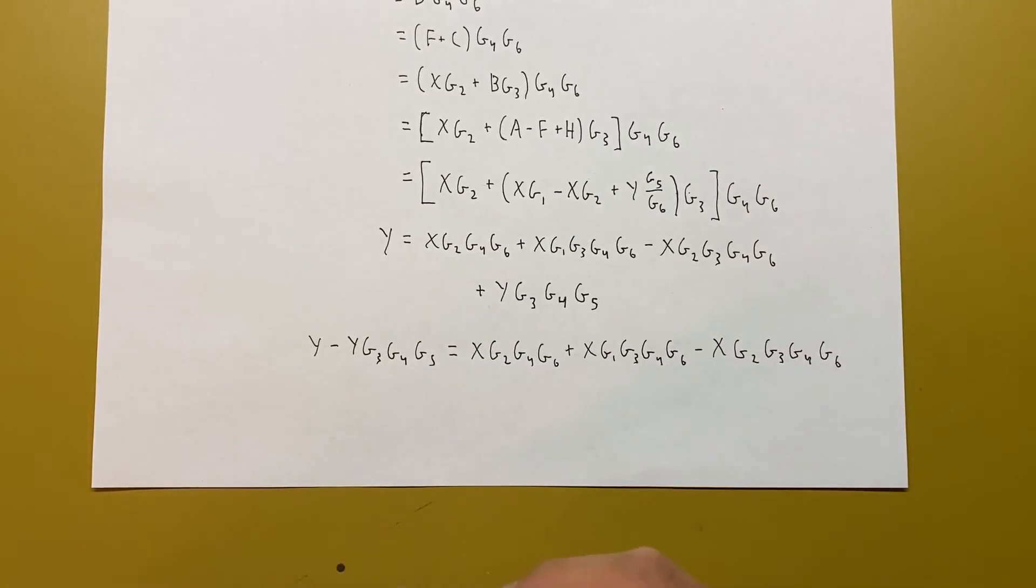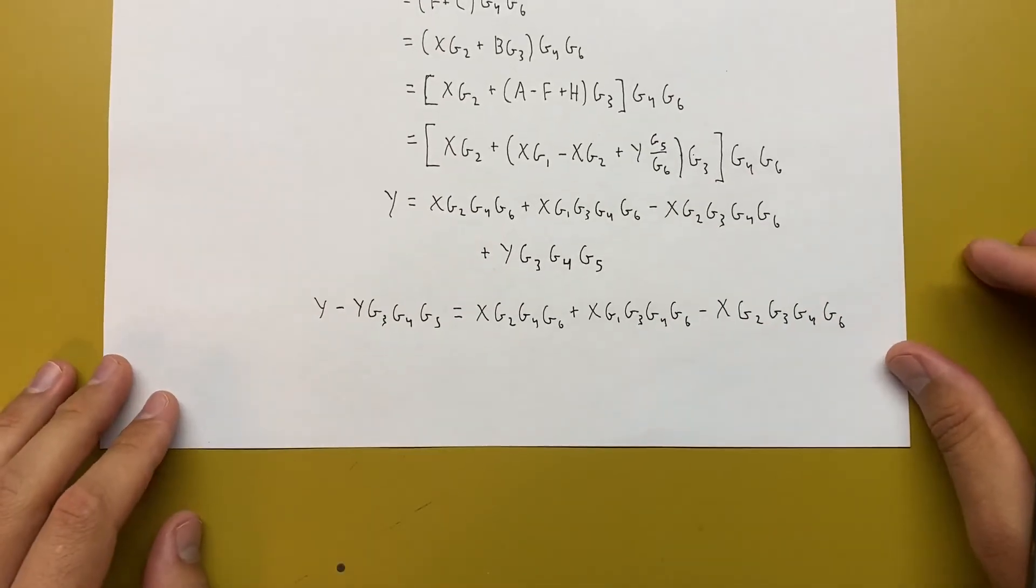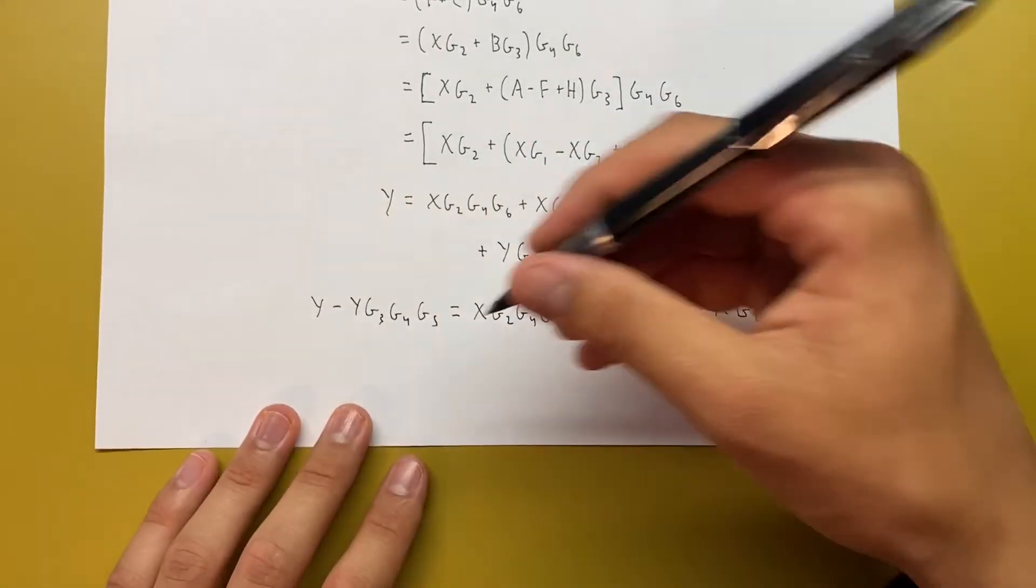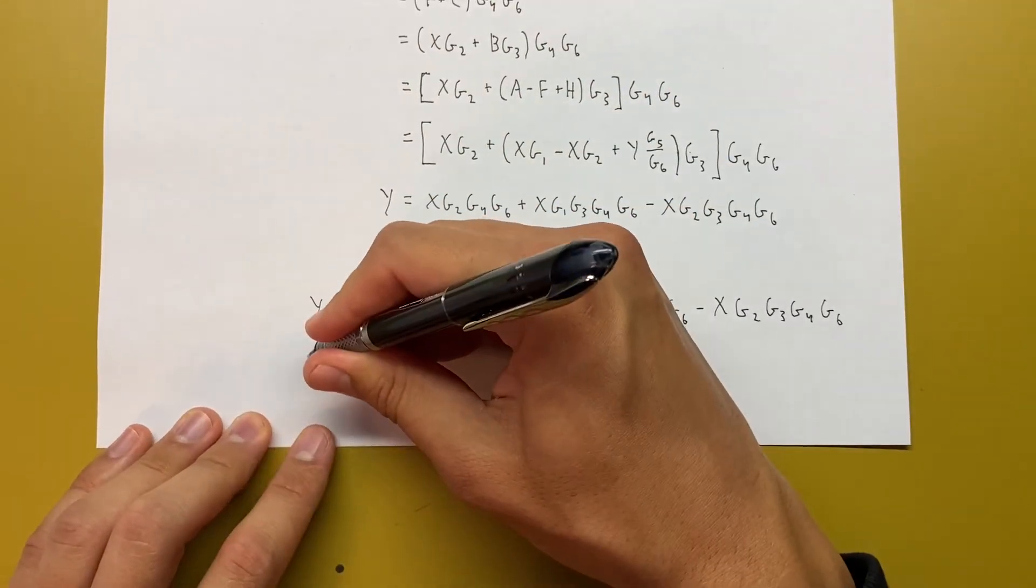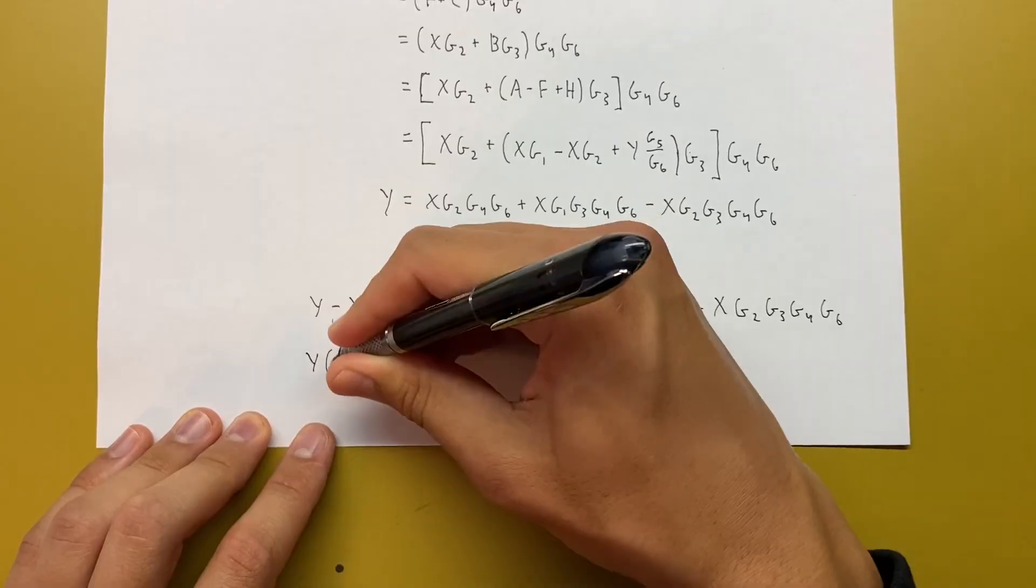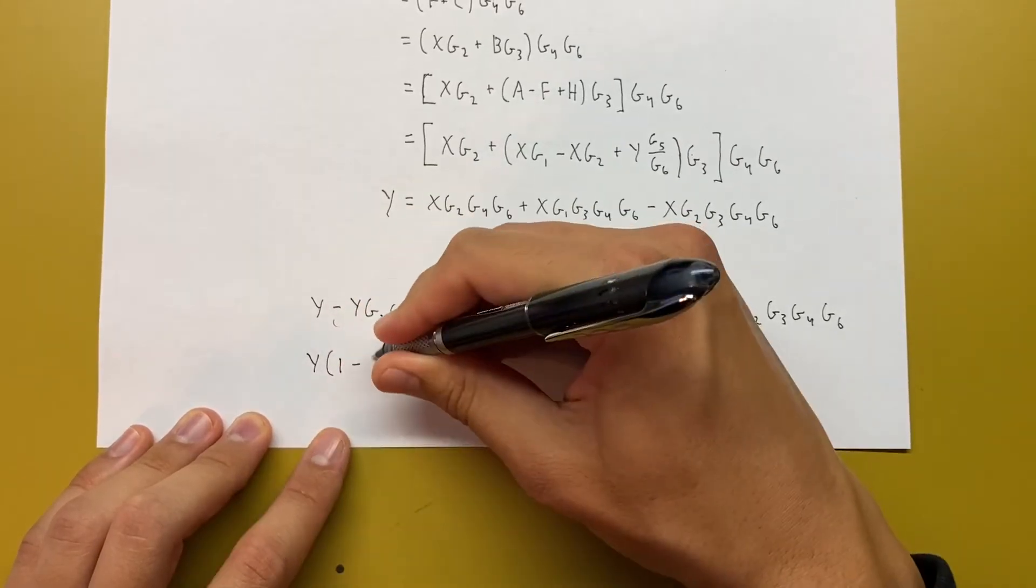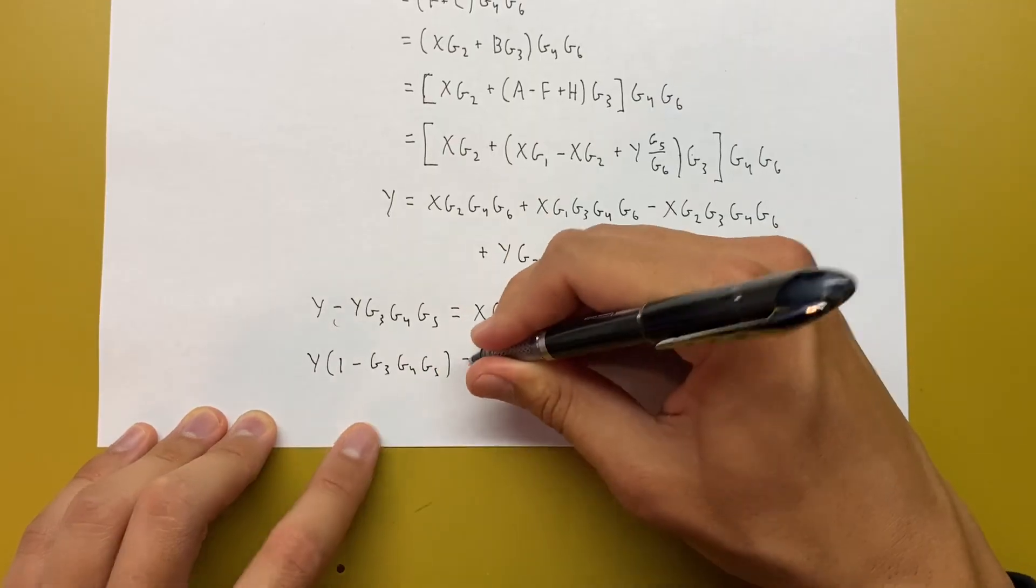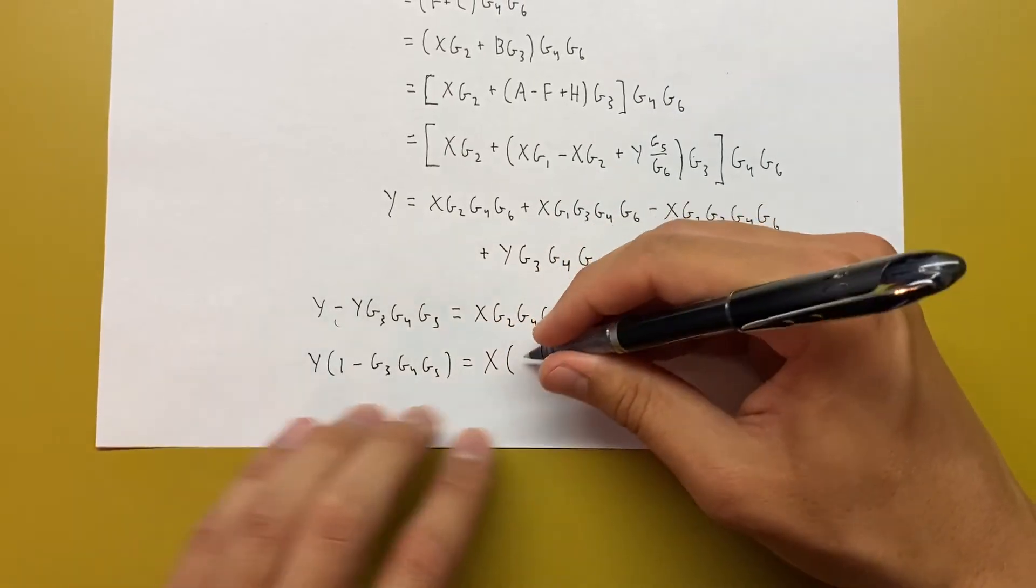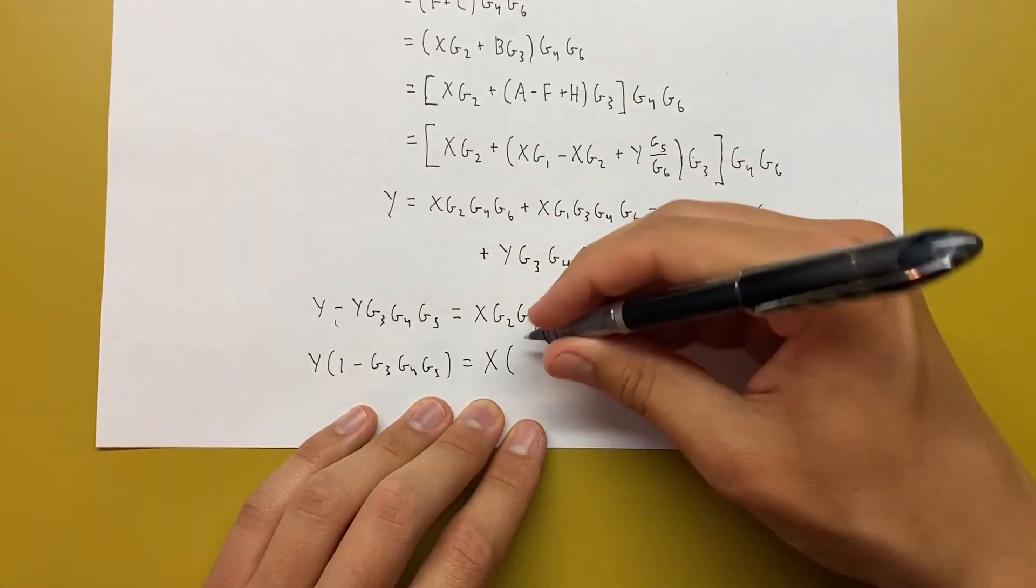Now you don't have to write this step out, but I will for completeness. I'm going to factor out a Y from this side and an X from the right-hand side.